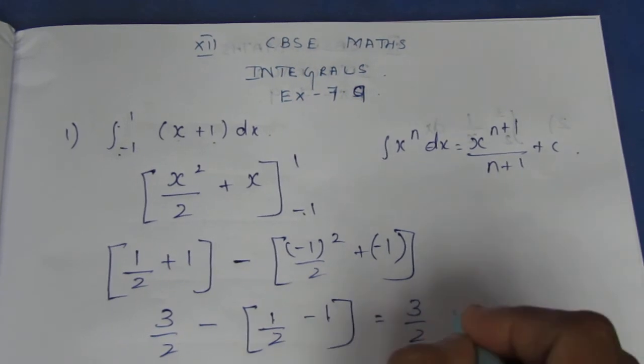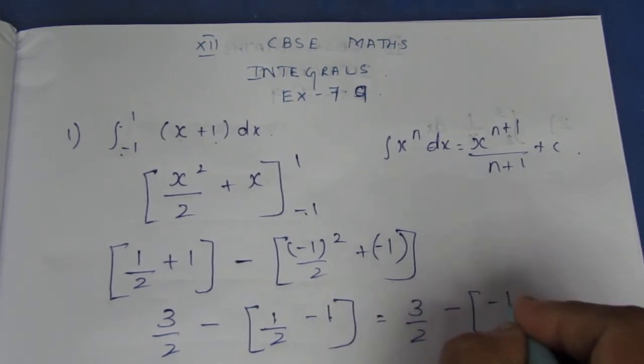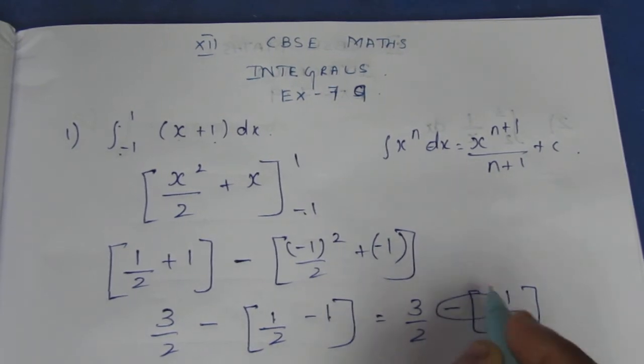Solving this, it becomes minus 2 plus 1 will become minus 1. So, 3 by 2 minus of minus 1 by 2. Minus into minus will become plus.